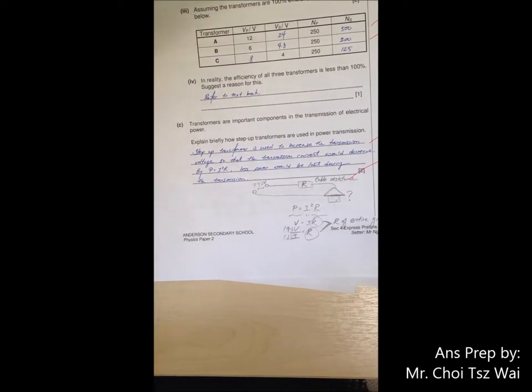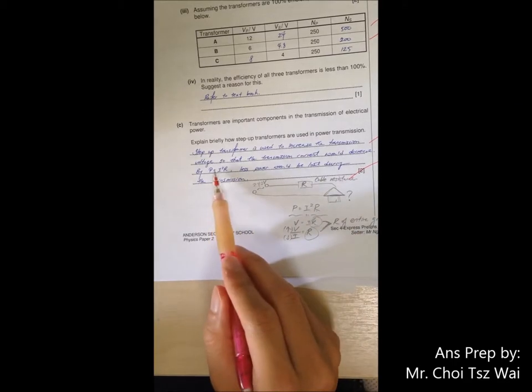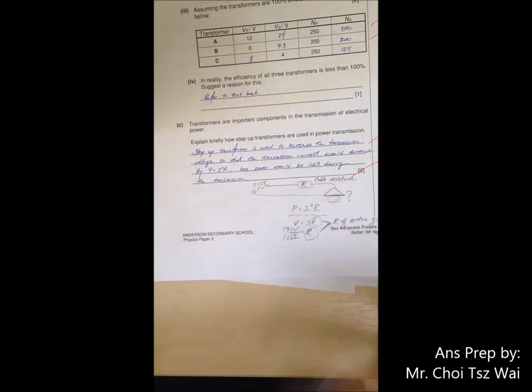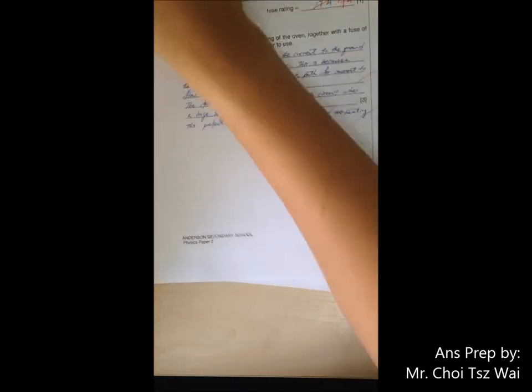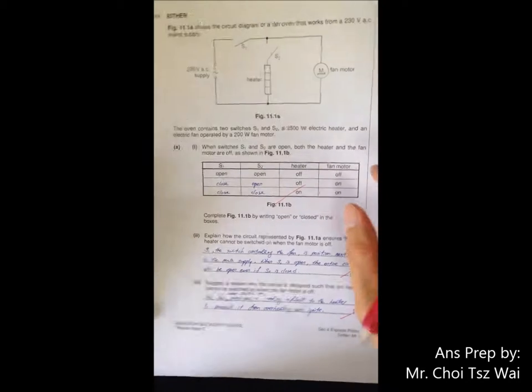That's why when your voltage is being stepped up, your current flowing through the cable will be less. And because power dissipation is by P equals to I squared R, so your power dissipated by the current will be less. That's how this thing works. If you are still not sure, please come to me. Let's continue.